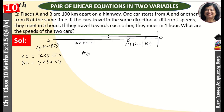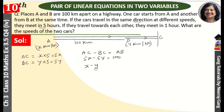AC minus BC equals AB. So 5x minus 5y equals 100. Dividing both sides by 5, we get x minus y equals 20. This is our first equation.